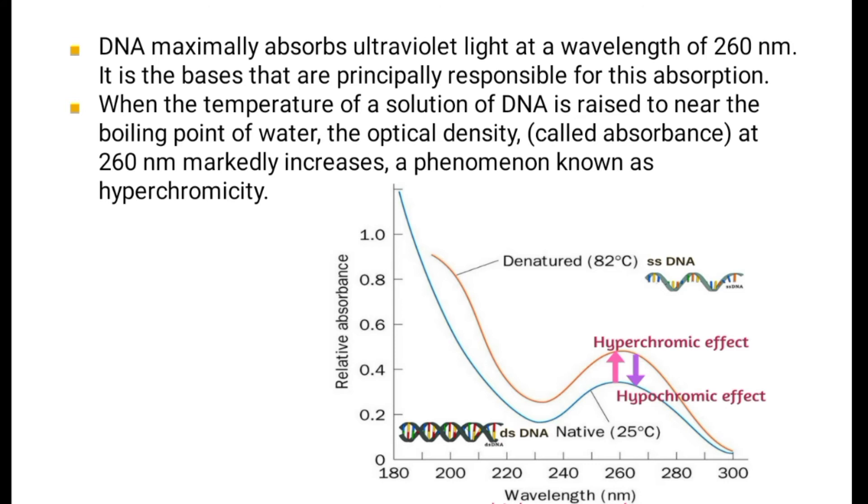DNA maximally absorbs ultraviolet light at a wavelength of 260 nm. It is the bases that are principally responsible for this absorption. When the temperature of a solution of DNA is raised to near the boiling point of water, the optical density, called absorbance, at 260 nm markedly increases, a phenomenon known as hypochromicity.